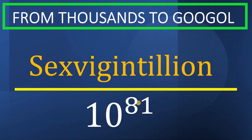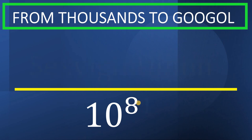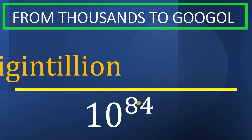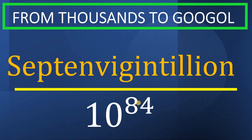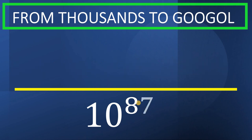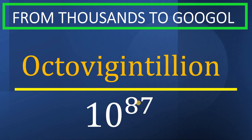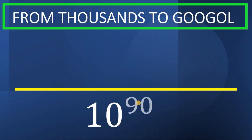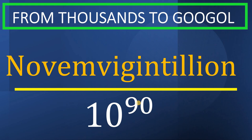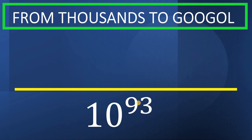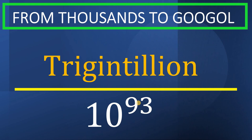10 raised to 84, it is called septenvigintillion. 10 raised to 87, it is called octovigintillion. 10 raised to 90, it is called novemvigintillion. 10 raised to 93, it is called trigintillion.